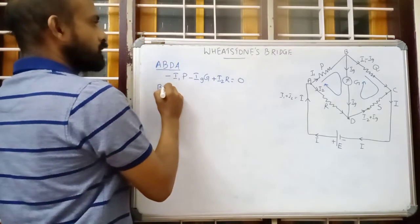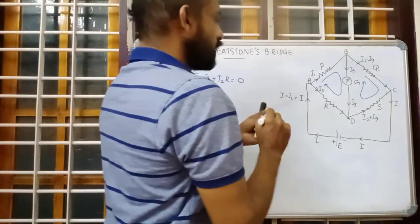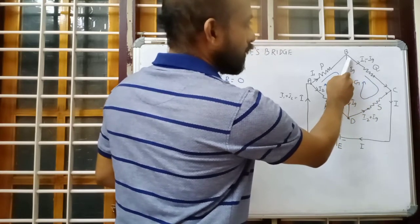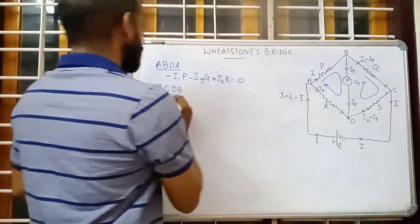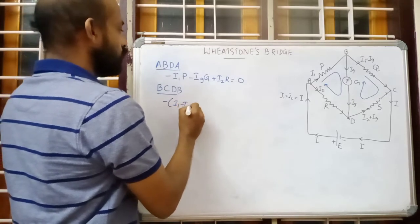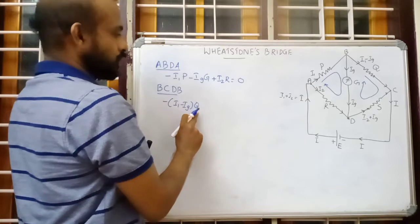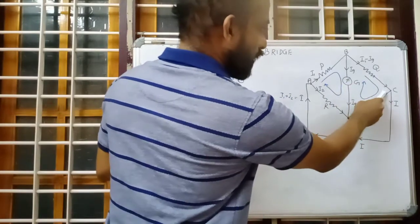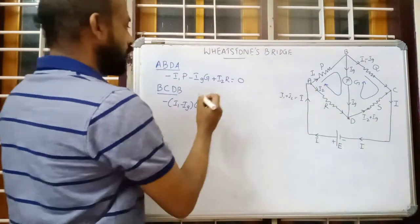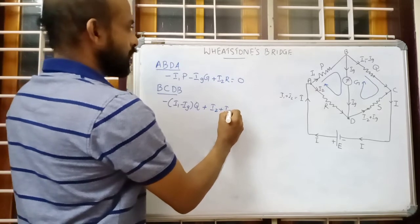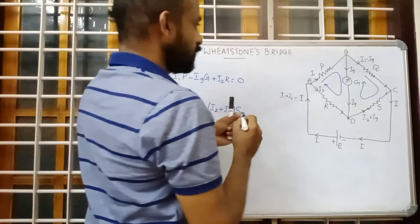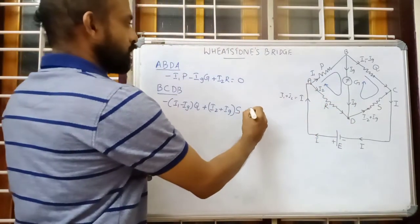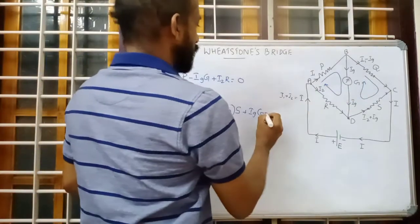For loop BCDB, we travel from B to C in the same direction as current, giving negative potential: minus (I1 minus Ig)·Q. Then travelling from C to D, current is in the upward direction while we travel downward, so we take positive: plus (I2 plus Ig)·S. Then moving upward from D to B, current is in the downward direction, giving positive: plus Ig·G. This equals zero: minus (I1 minus Ig)·Q plus (I2 plus Ig)·S plus Ig·G = 0.